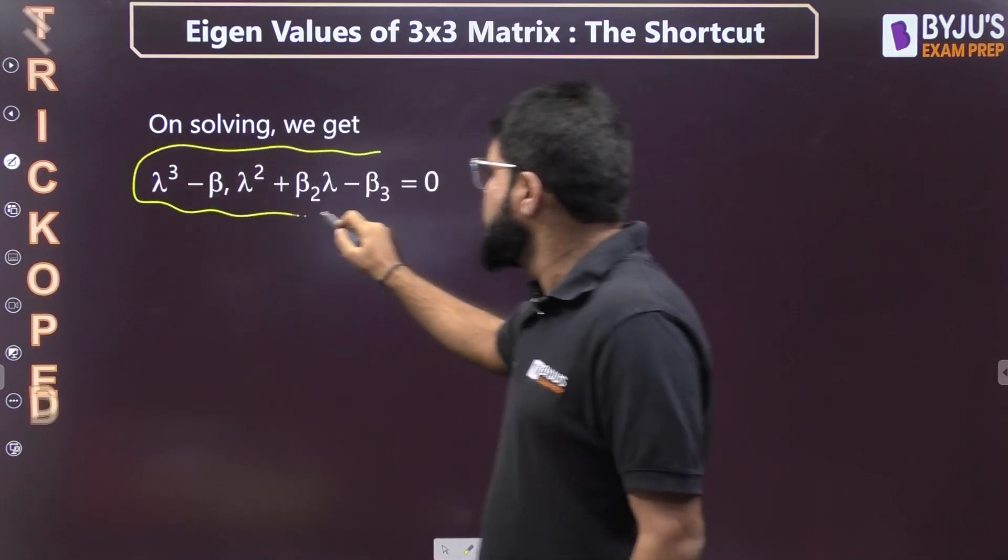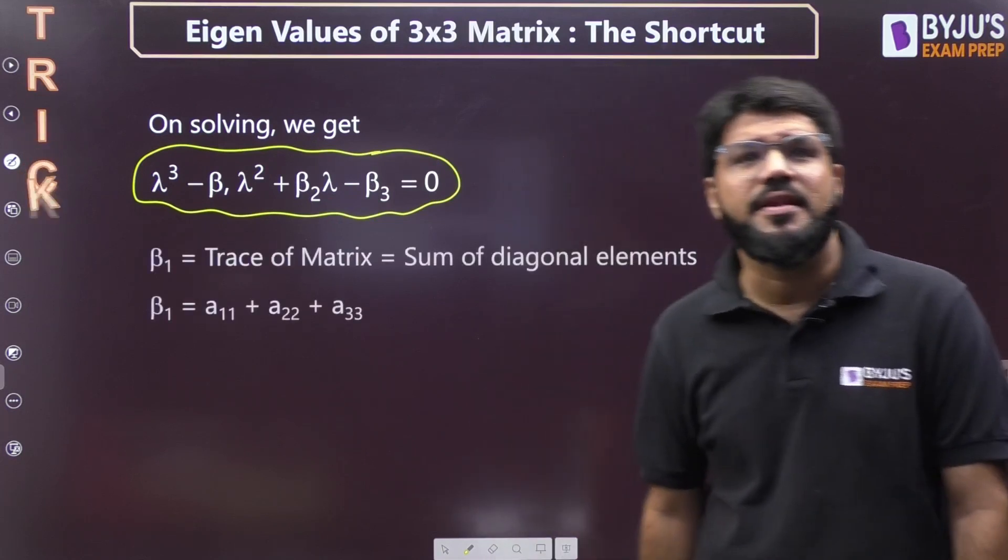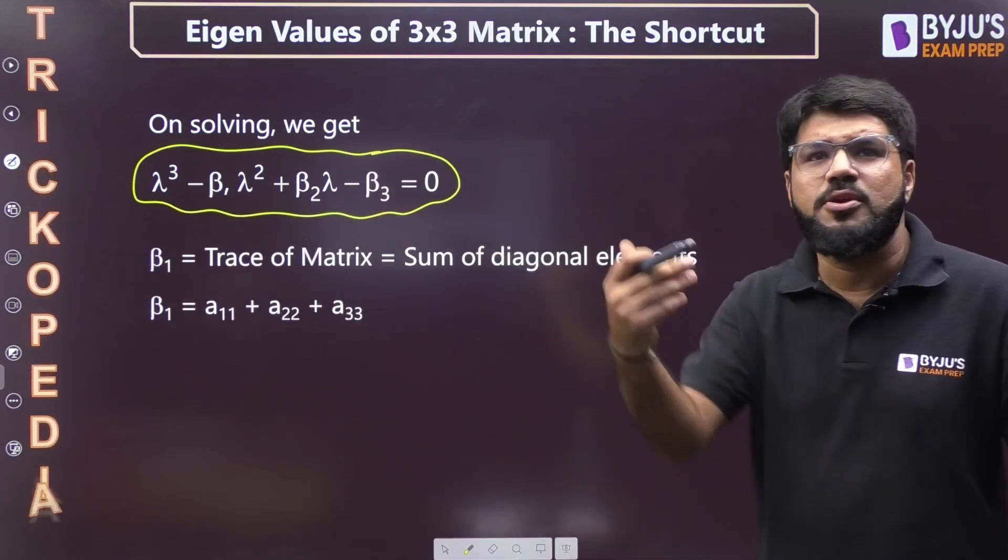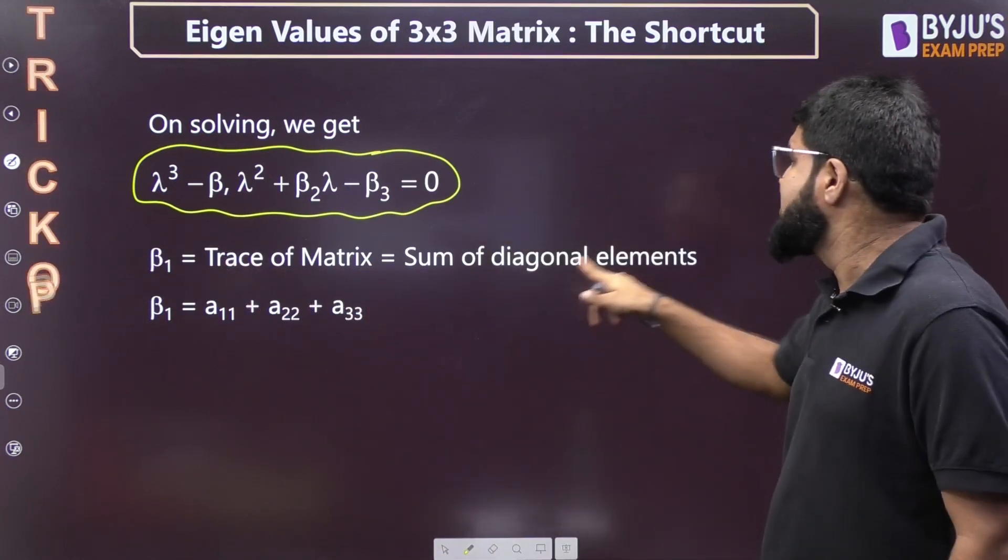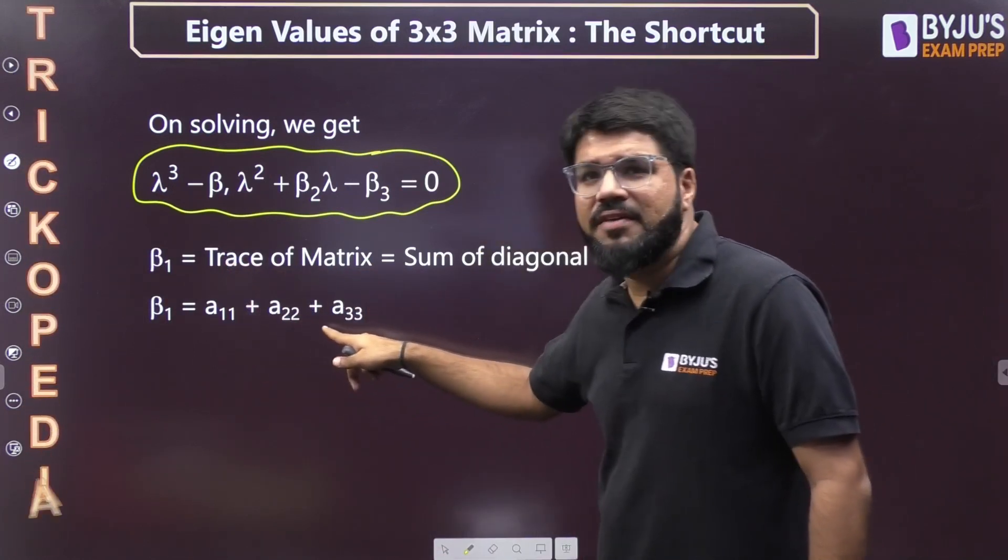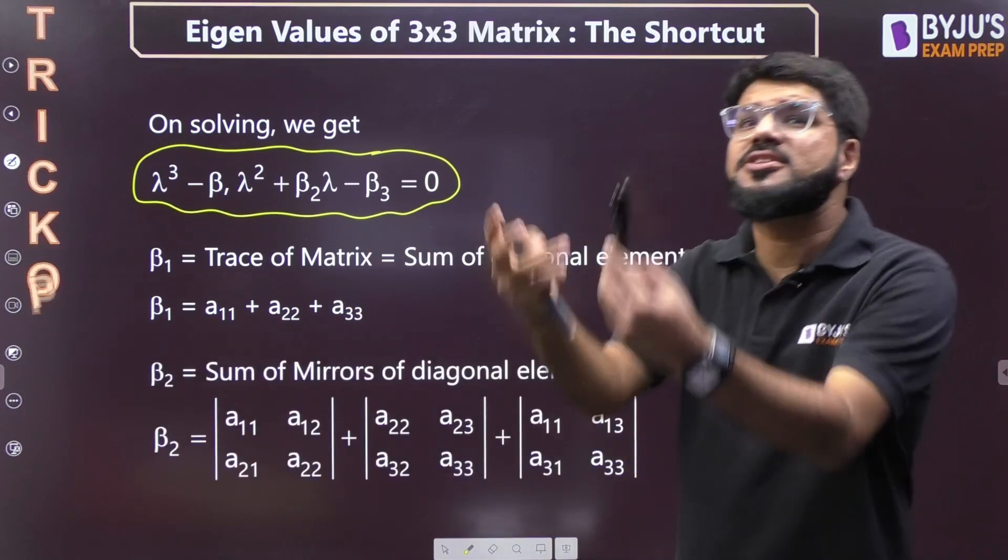Every time if you solve the determinant, it's time-consuming. Let's have a direct look at the characteristic equation. The method I'm going to give you is: λ³ - β₁λ² + β₂λ - β₃ = 0. Directly put down β₁, β₂, β₃, and you get the equation without solving the determinant. β₁ is the trace of the matrix, the sum of diagonal elements.